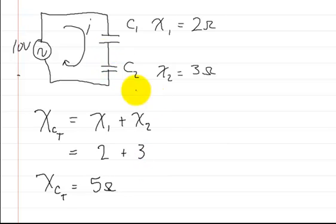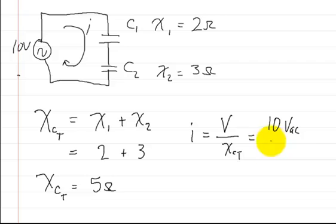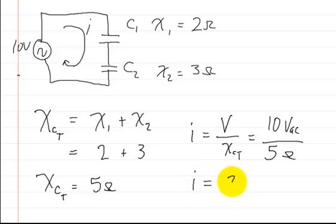Now we can solve the problem. The total current is going to be equal to the voltage supply divided by the total reactance. So that's 10 volts AC divided by the total reactive capacitance of 5 ohms. And so we get the total current as being 2 amps. And that's how you would solve that.